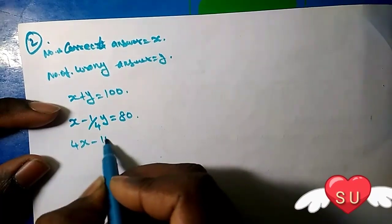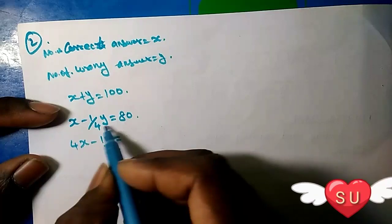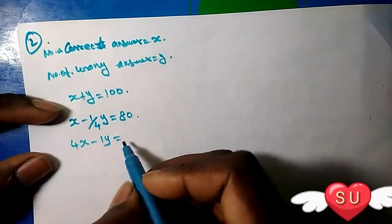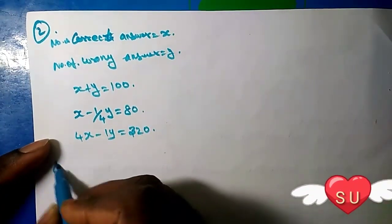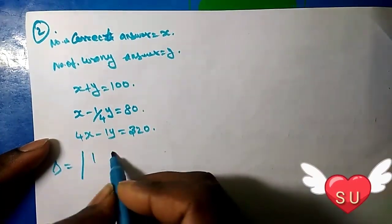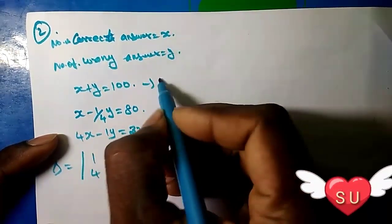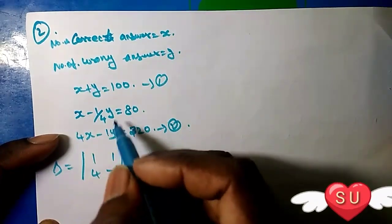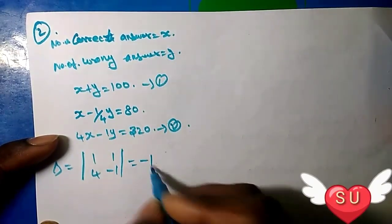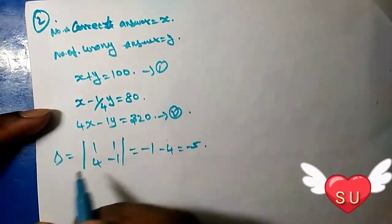Setting up the second equation: 4x minus y divided by 4 equals 80. Multiplying by 4, we get 4x minus y equals 320. Now we'll solve using the determinant method. First equation stays as x plus y equals 100.